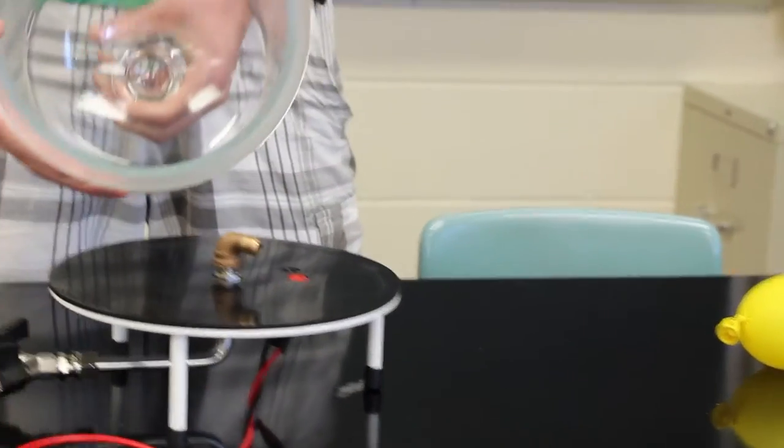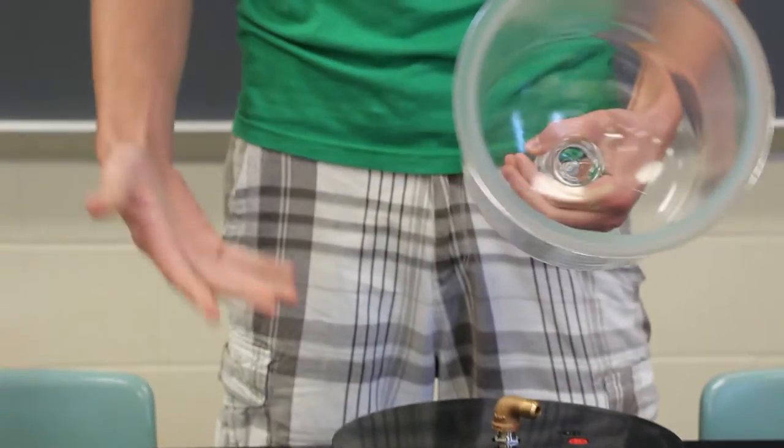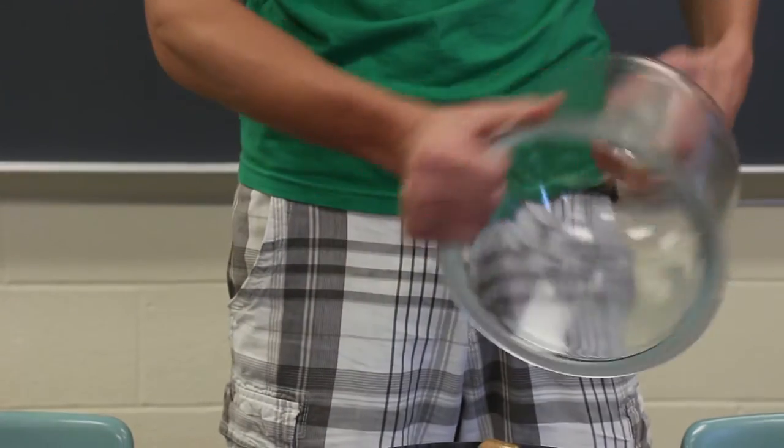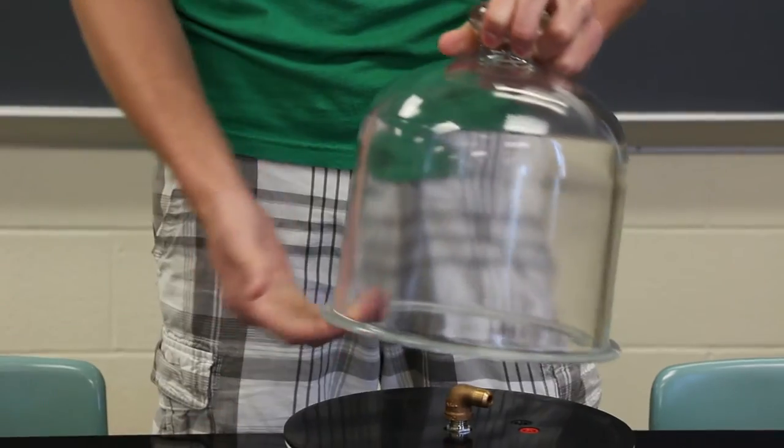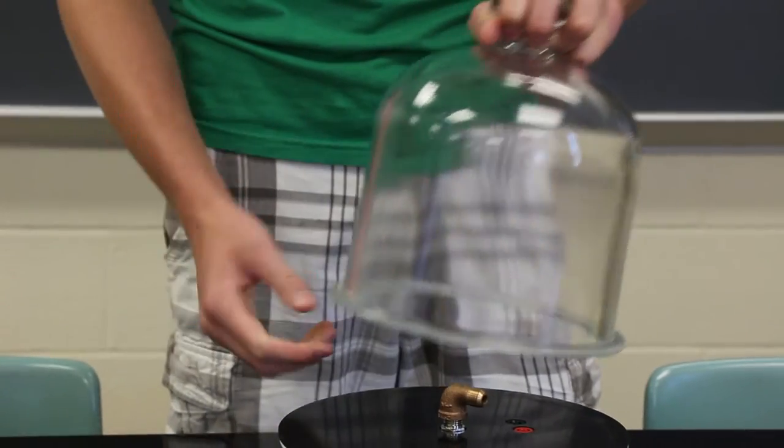And next we have our bell jar. These come in multiple different shapes and sizes, and you just want to make sure that there aren't any cracks on them, otherwise it won't have a vacuum seal on it.